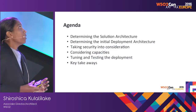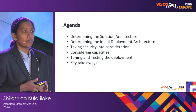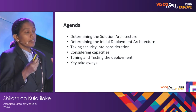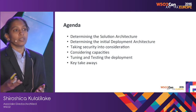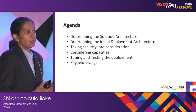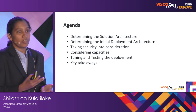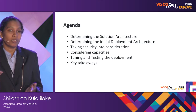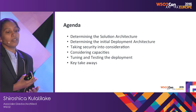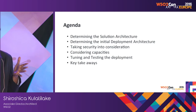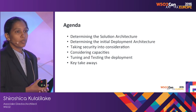What I will be talking about is how, given a business requirement, we can determine the solution architecture and then based on that, start building how the deployment architecture can be done. We'll take into consideration the details from the solution architecture, the functional needs, the non-functional needs, and then look at what the security needs are and how those would impact the deployment. And then looking at capacity planning and how that would impact deployment, and finally how your deployment can be tuned and tested.